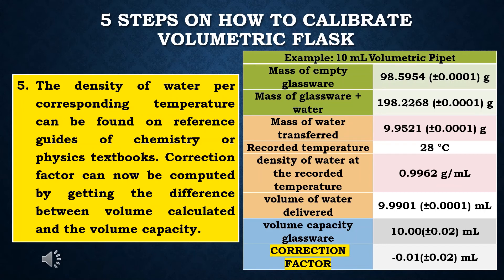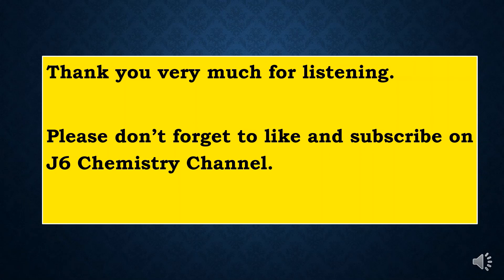Step 5: the density of water at a corresponding temperature can be found on reference guides in chemistry or physics textbooks. The correction factor can now be computed by getting the difference between the volume calculated and the volume capacity. In the example, the volume capacity of the glassware as found on the label is 10.00 ml. Correction factor equals 9.9991 ml minus 10.00 ml, giving a computed correction factor of −0.01 ±0.02 ml, rounded to the correct uncertainty and significant figures. Thank you very much for listening. Please don't forget to like and subscribe to J6 Chemistry Channel. Always keep safe.